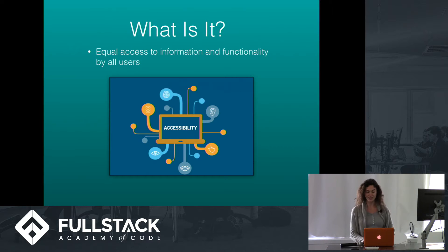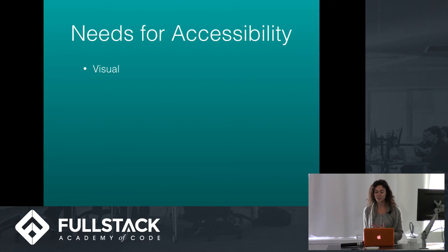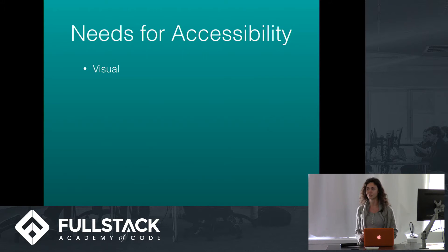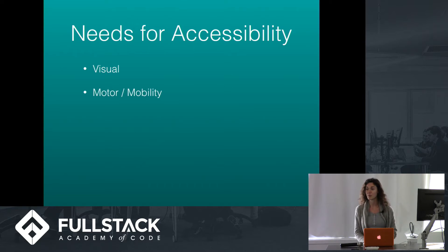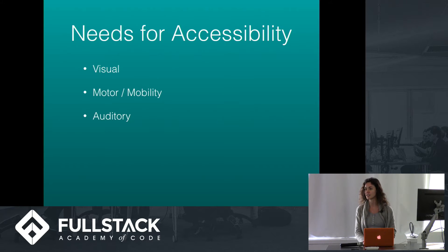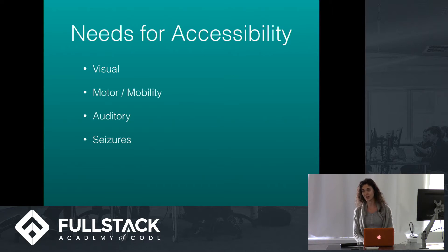So what kind of disabilities am I talking about? We're going to start with visual impairments. That includes blindness, color deficiencies, general poor vision, and low vision. Next, there's motor and mobility issues, such as difficulty or an inability to use your hands. Then there's auditory impairments, such as deafness or a loss of your hearing. Then we have seizures, most often caused by the disease epilepsy.